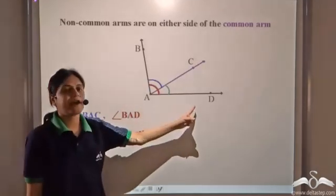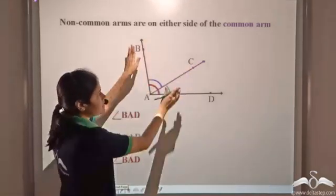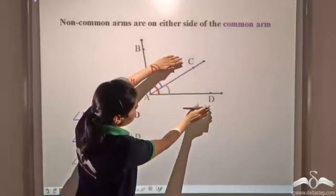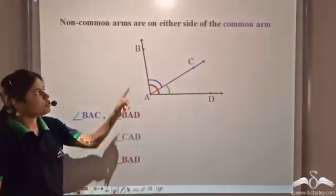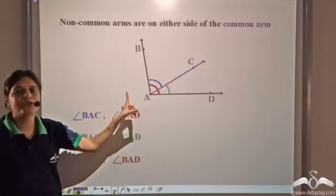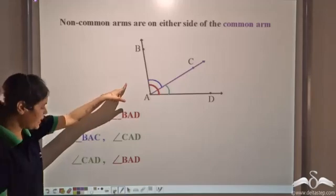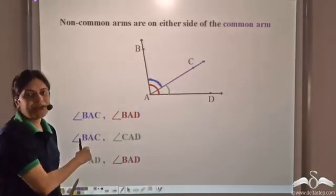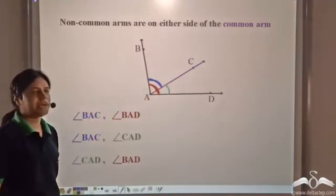What if we have angles like this? We have angle BAC, angle CAD, and angle BAD — the bigger angle. So there are three angles being formed. Which two out of these three form adjacent angles? Let us first check angle BAC and angle BAD.